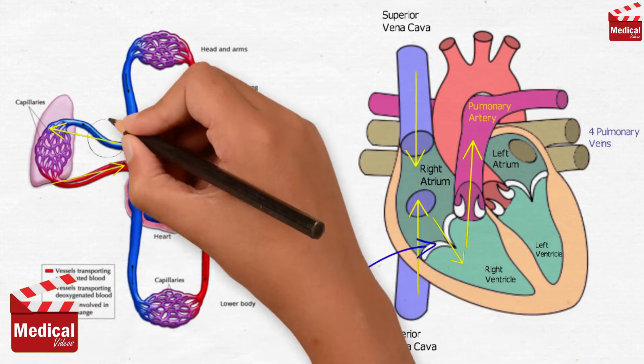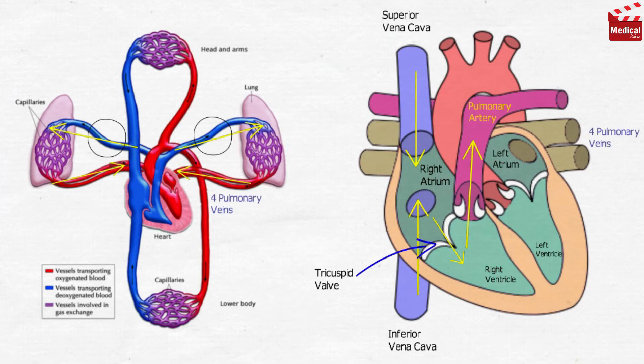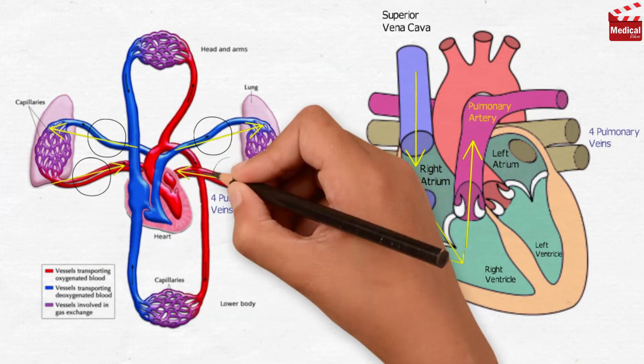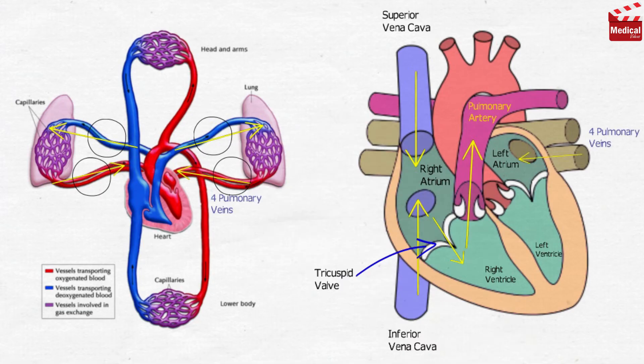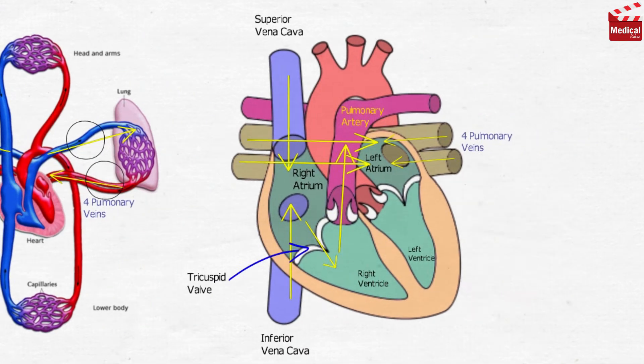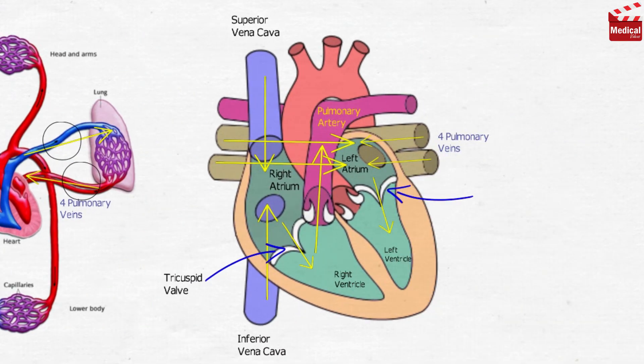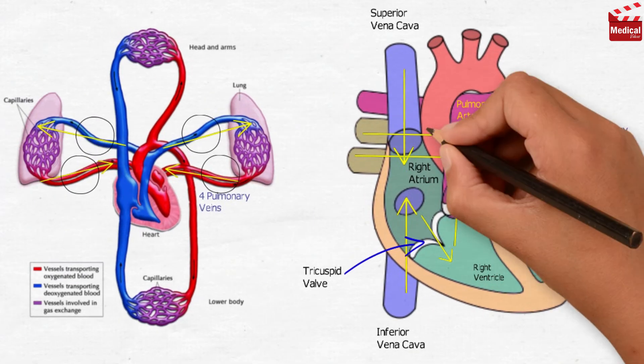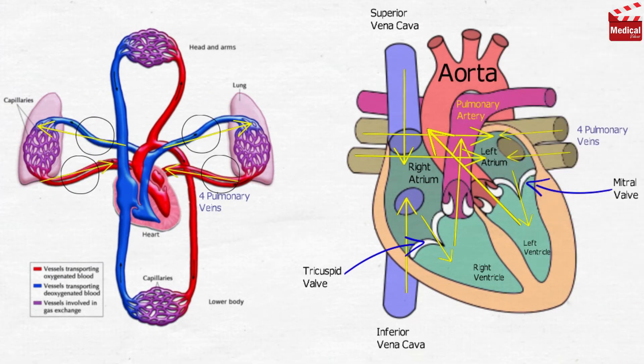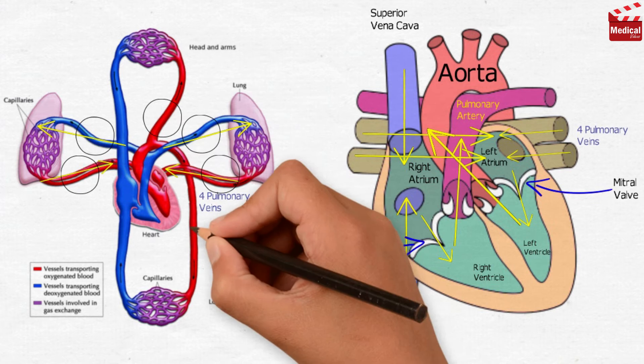And here we should notice these exceptions: the pulmonary artery is the only artery that carries deoxygenated blood, and the pulmonary veins are the only veins that carry oxygenated blood. Then blood passes from the left atrium to the left ventricle through mitral valve, then contracts to push the blood through aorta, which then distributes blood to all body tissues.